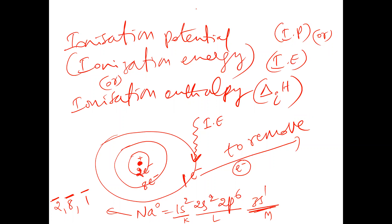First, let's take the definition of ionization enthalpy. Ionization enthalpy, ionization potential, or ionization energy — we can use any of these terms. They can be abbreviated as IP, IE, or delta IH.